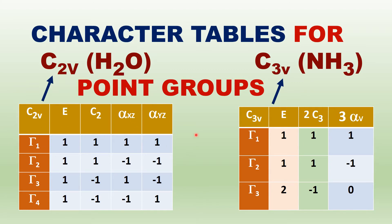In C2V, there are four symmetry operations and four irreducible representations: Gamma 1, Gamma 2, Gamma 3, Gamma 4. In C3V, there are six symmetry operations but only three classes. Therefore, there are only three irreducible representations. The number of irreducible representations equals the number of symmetry classes. These characters are obtained using the four simple rules of the great orthogonality theorem — please watch the previous lectures.